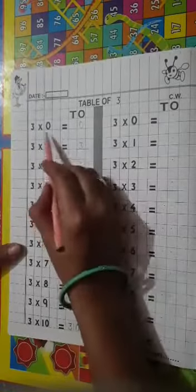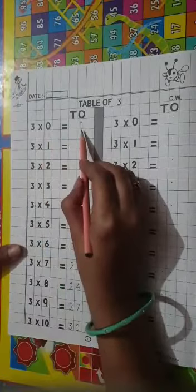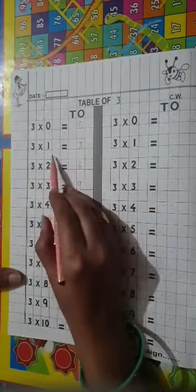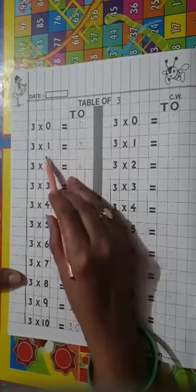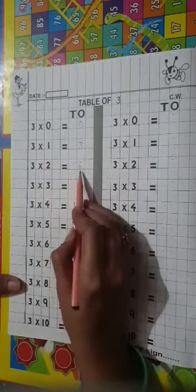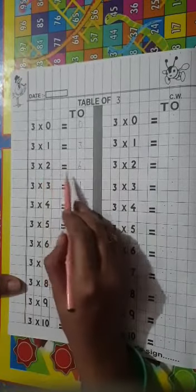3 times 0 is 0, 3 times 1 is 3, 3 times 2 is 6, 3 times 3 is 9, 3 times 4 is 12, 3 times 5 is 15.